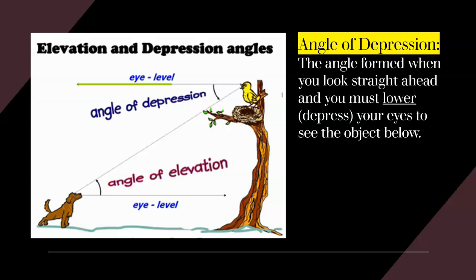Then we have the angle of depression. The angle of depression is formed when you look straight ahead and you must lower or depress your eyes to see the object below. The bird sitting up in the tree looking straight across and then looking down at the barking dog — that angle formed is the angle of depression. An easy way to remember it: when you're depressed, you drop your head down. So the angle of depression is the angle formed when you drop your head down and look down.